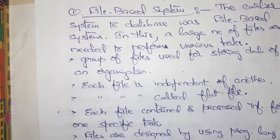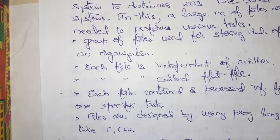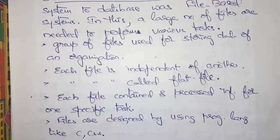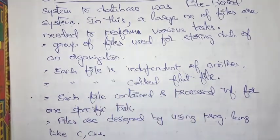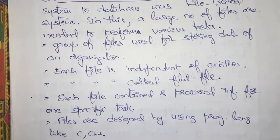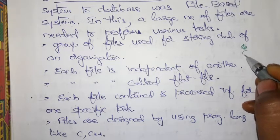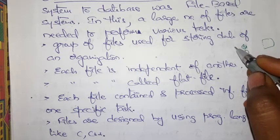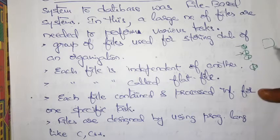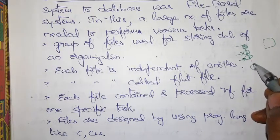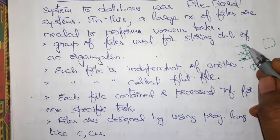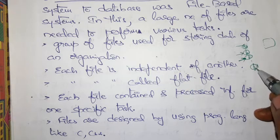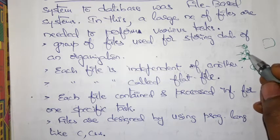In a file-based system, a large number of files are needed to perform various tasks. Each and every piece of information will be stored in the form of files. A group of files are used for storing data of an organization — for example, file one, file two, file three — storing employee personal details, company-related information, and so on.